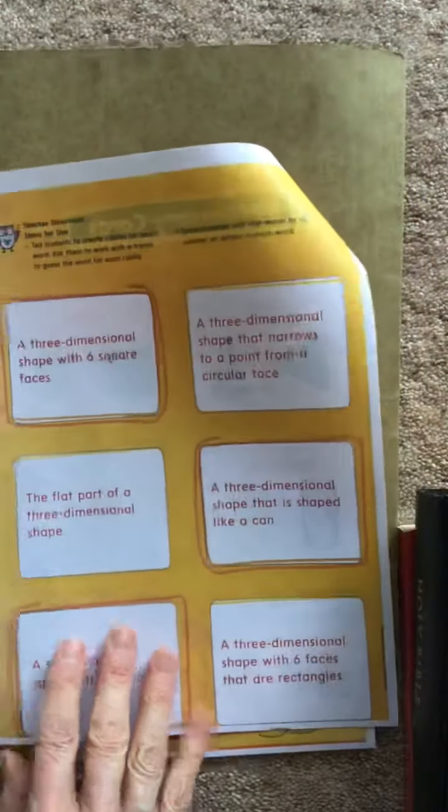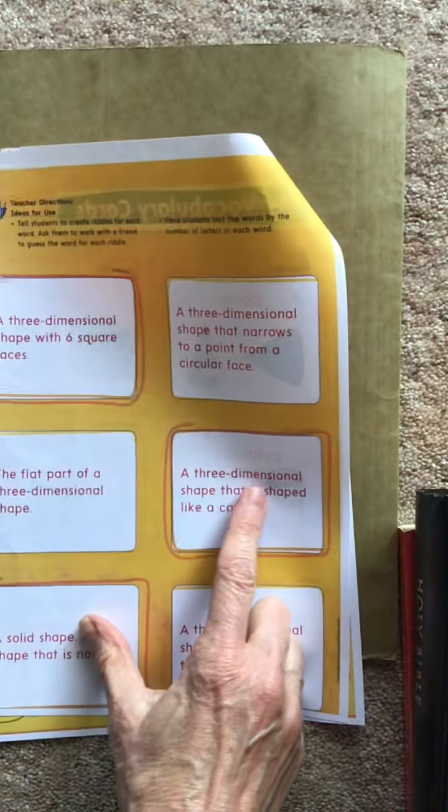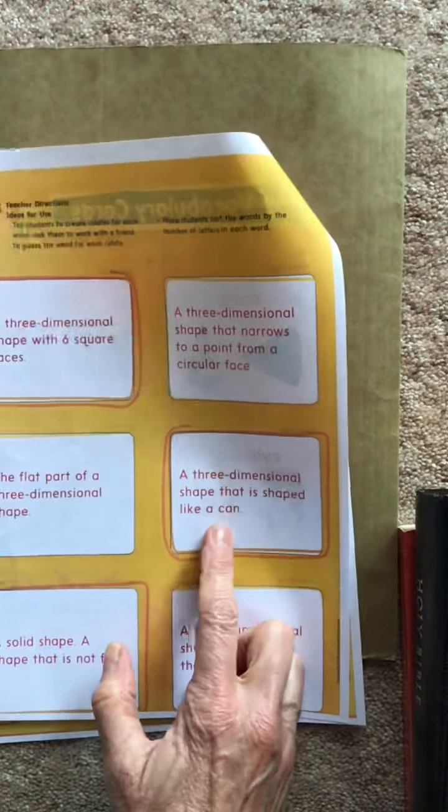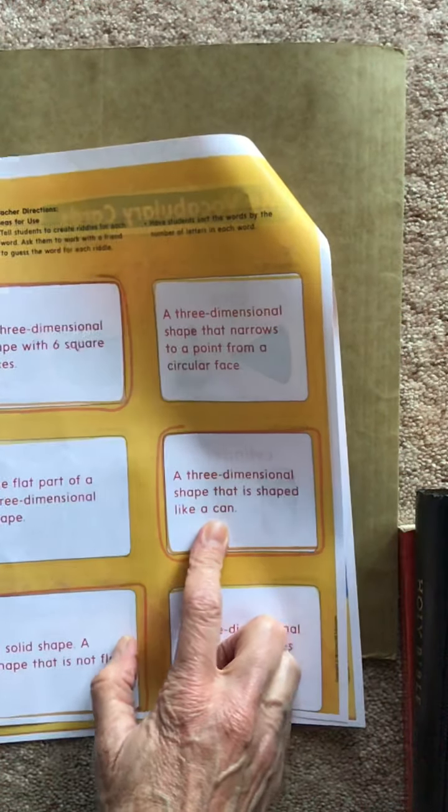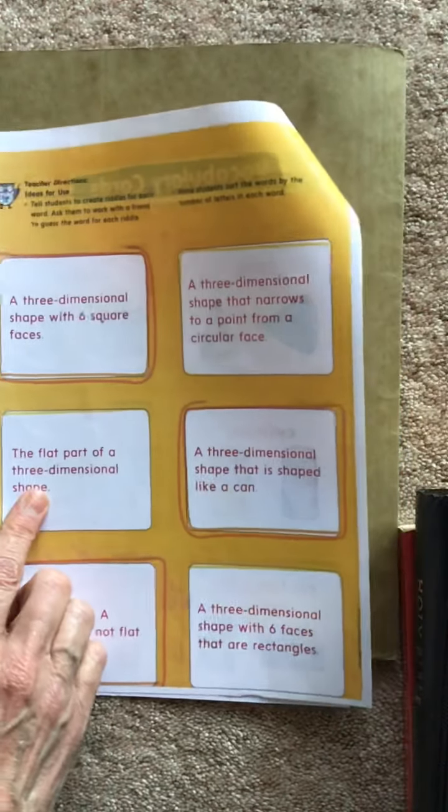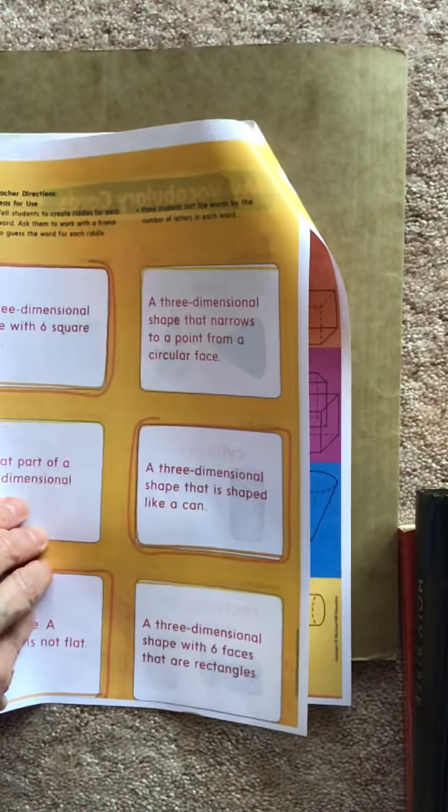The definition of a cylinder is a three-dimensional shape that is shaped like a can. The flat part of a three-dimensional shape is called a face.